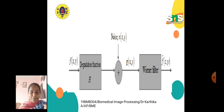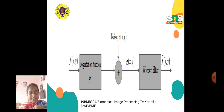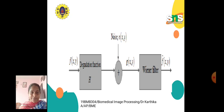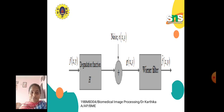Here is the model for Wiener filtering, which uses both degradation and noise. The input is f(x,y), which is fed into the degradation function h. It takes both noise and degradation — noise n(x,y) is summed with the degradation function. The output is g(x,y), which is fed into the Wiener filter, and we get the output f-cap(x,y).